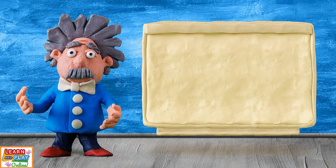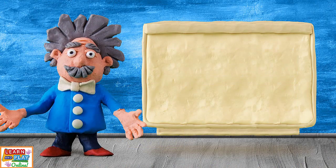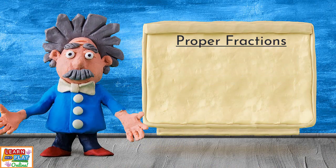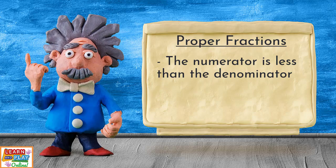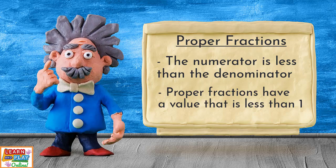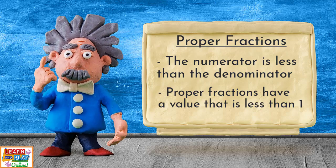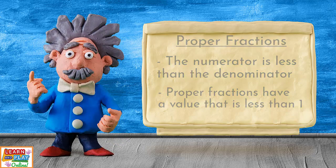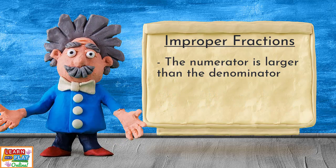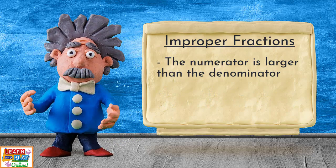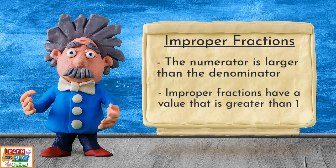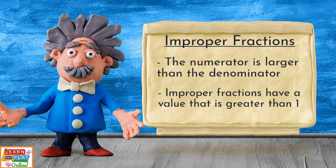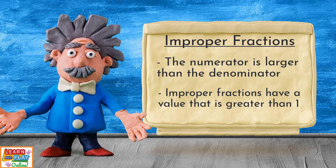Let's recap what we learned today. For proper fractions, the numerator is less than the denominator, and proper fractions have a value that is less than 1. In improper fractions, the numerator is larger than the denominator, and improper fractions have a value that is greater than 1.